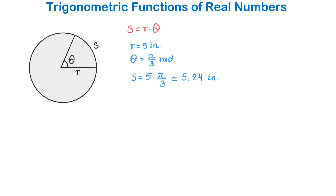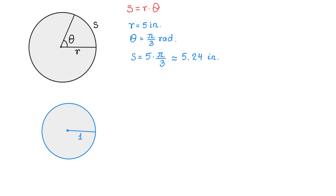Now let's consider a circle that has radius 1, which we call the unit circle. In this circle, we have a central angle that measures T radians and an arc intercepted by this angle. To find the length of this arc, we use the formula S equals R multiplied by theta, replacing R with 1 and theta with T. We get S equals T, meaning that in a unit circle, the length of the intercepted arc is exactly the same as the radian measure of the central angle.